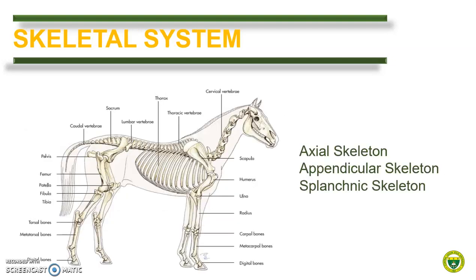The skeletal system can be divided into three parts: axial, appendicular, and splanchnic skeleton. As a review, the axial skeleton includes the bones of the skull, vertebrae, ribs, and sternum. The appendicular skeleton is composed of the bones of the thoracic and pelvic limbs, while the splanchnic skeletons are those bones present in the soft tissues or visceral organs.